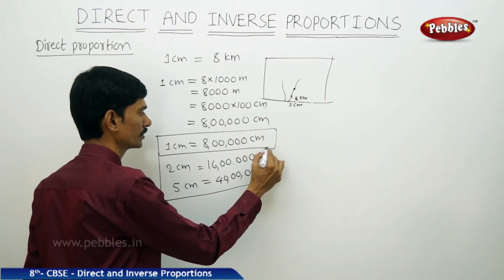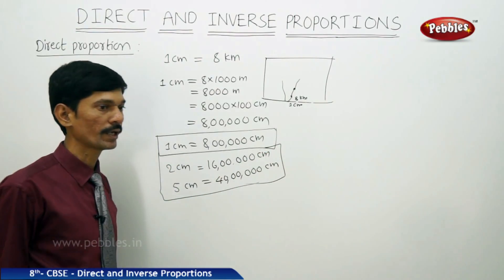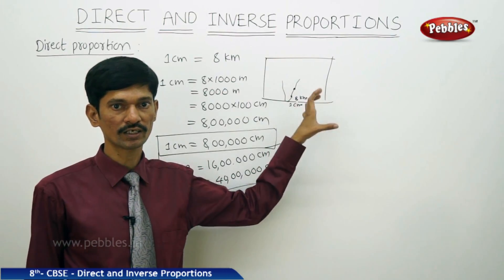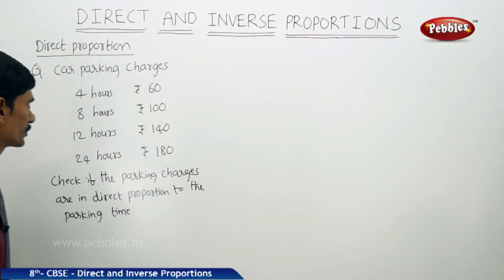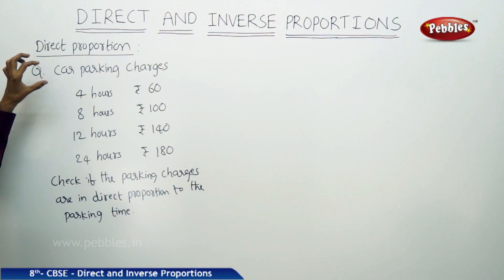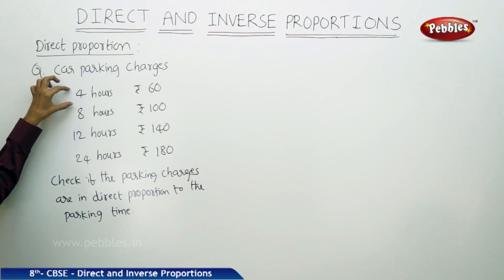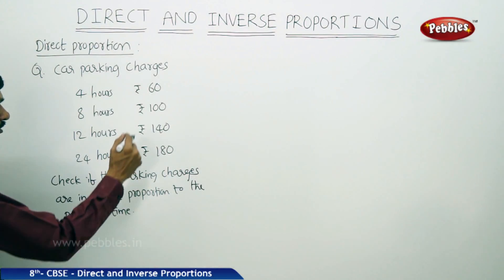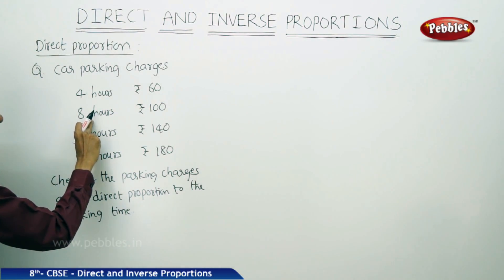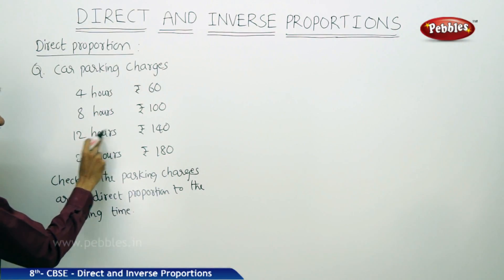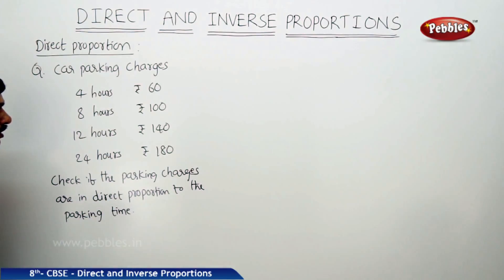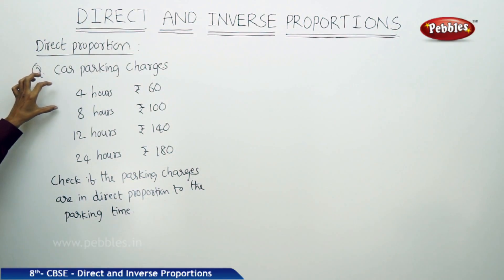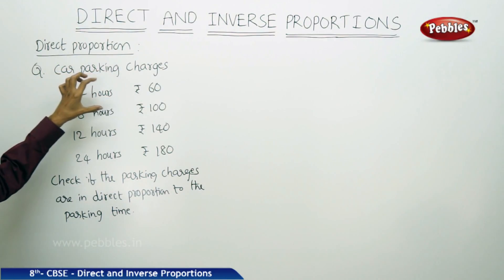We are choosing a convenient scale to draw maps which have very large areas. Now let us solve a few problems in direct proportion. Here, car parking charges — are they in direct proportion to the parking time or not?